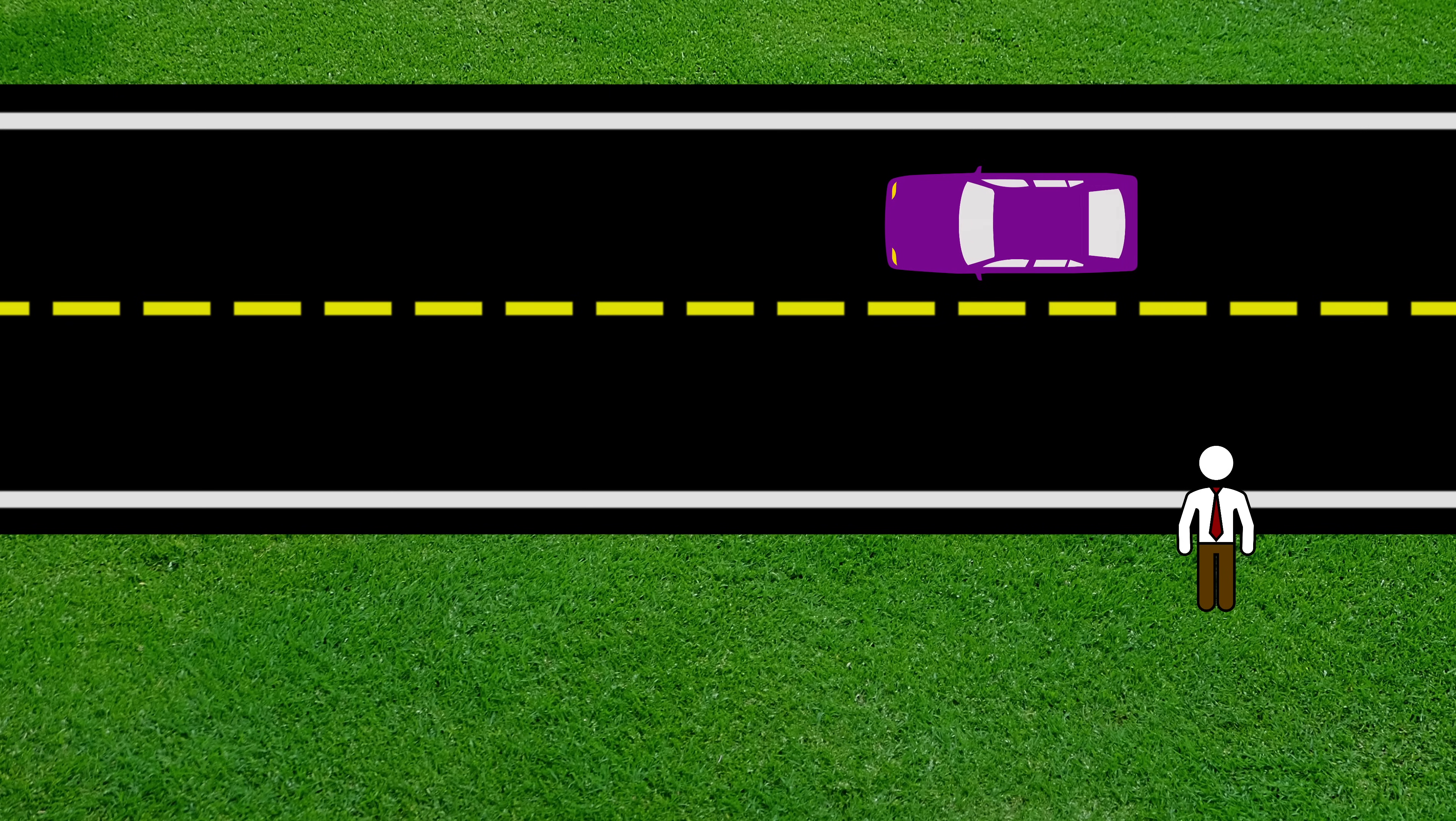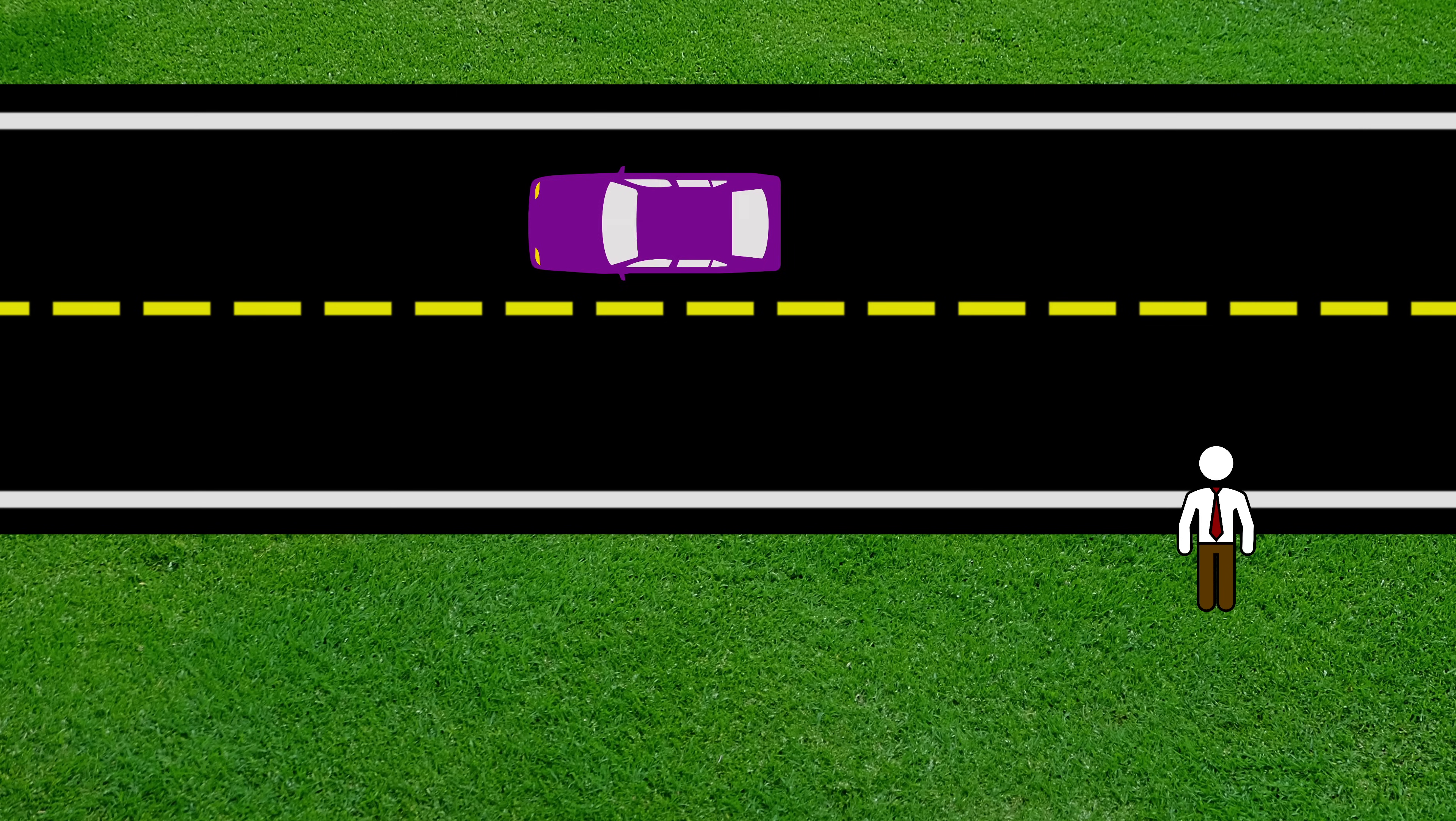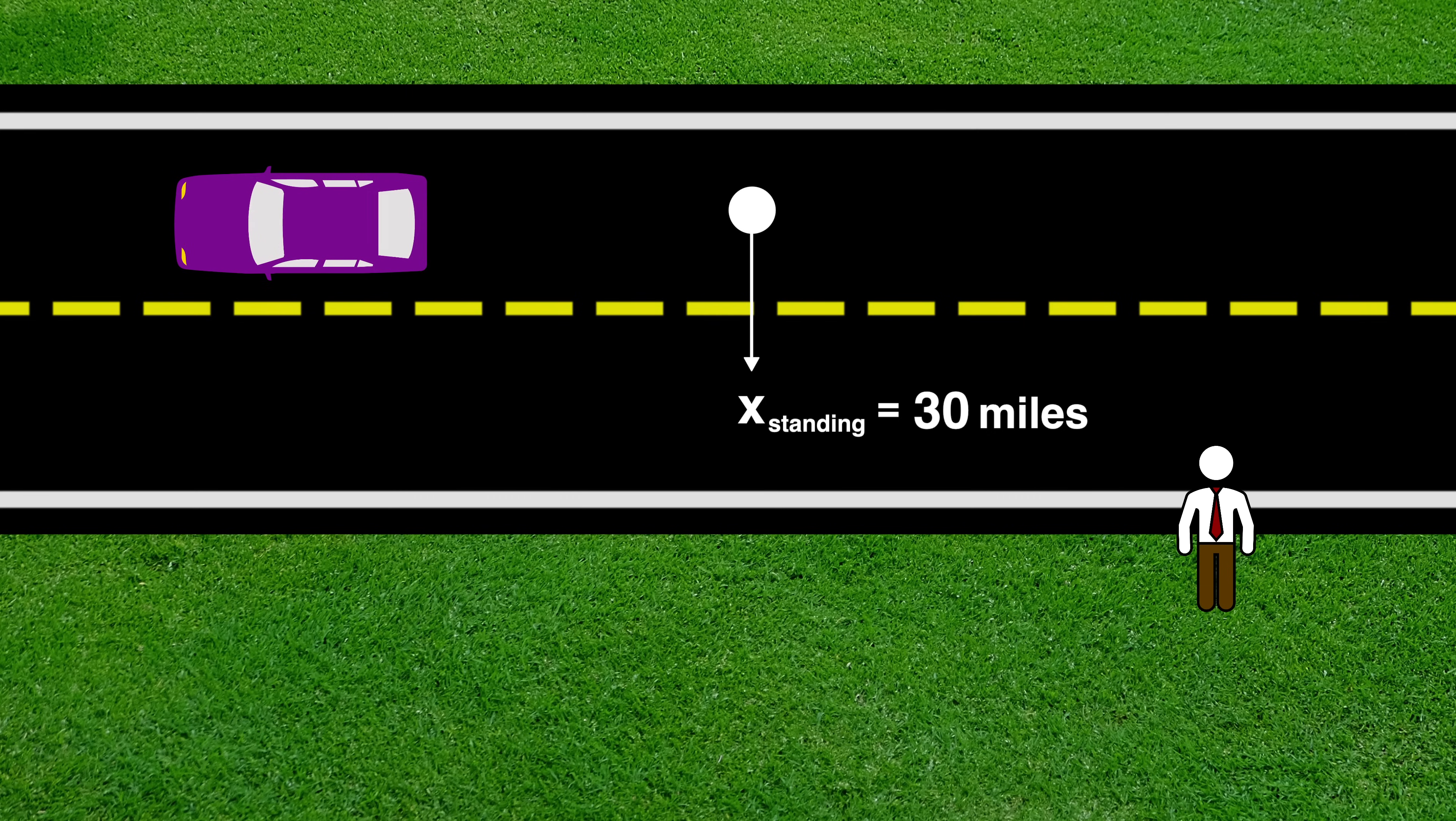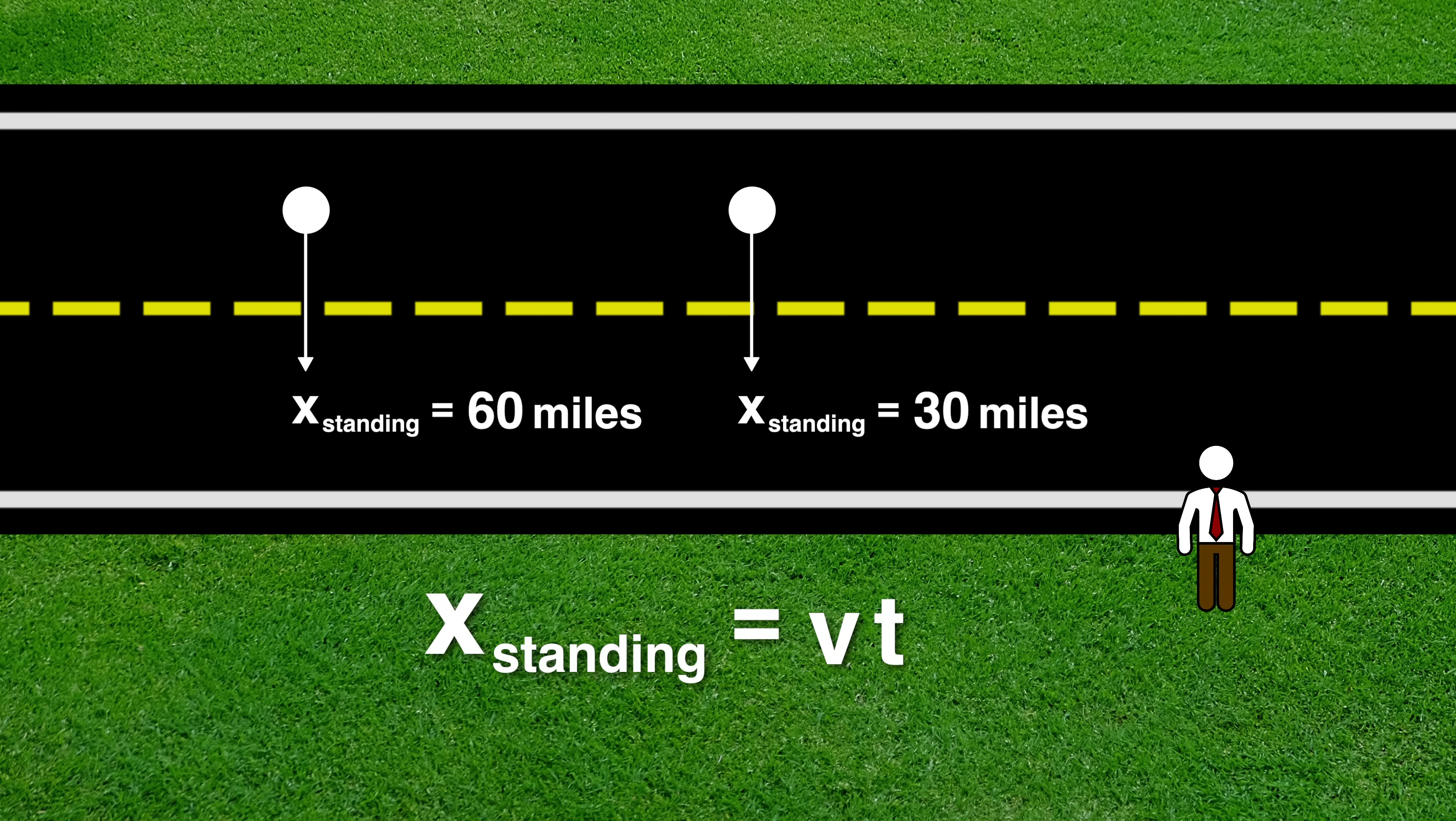Okay, so the standing guy thinks that the car guy is moving and his location after half an hour is plus thirty miles away and after an hour is plus sixty miles. In fact, we can write a simple equation for what the standing guy calls the car guy's location. It is simply his velocity times time. Now that's for the car guy's location. But we can generalize that.